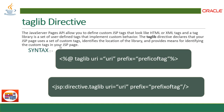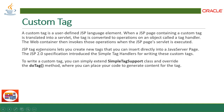A custom tag is a user-defined JSP language element. When a JSP page containing a custom tag is translated into a servlet, the tag is converted to operations on an object called a tag handler. The web container invokes those operations when the JSP page's servlet is executed. JSP tag extensions let you create new tags that you can insert directly into a Java Server Page. To implement a custom tag, you can extend the SimpleTagSupport class and override the doTag method where you place your code to generate content for the tag.